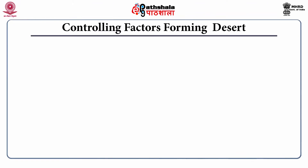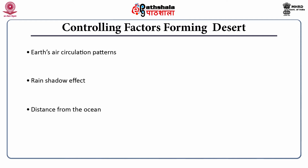Controlling factors forming deserts. There are several factors which control the formation of deserts: earth's air circulation pattern, rain shadow effect, distance from the ocean, and proximity to cold ocean currents. Let me discuss them one by one in detail.